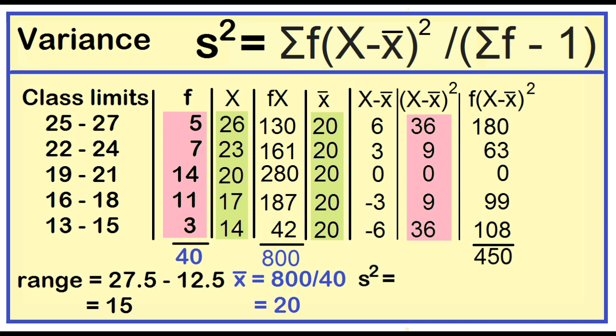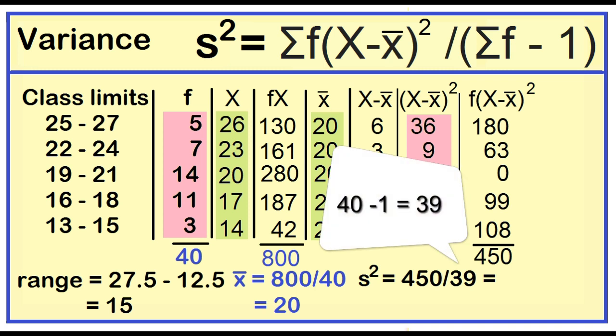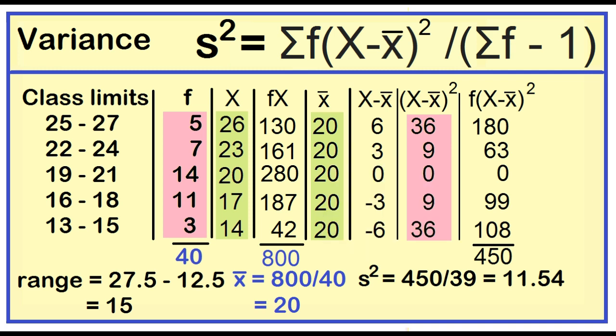Variance is equal to 450 divided by 39. Variance is equal to 11.54.